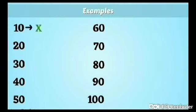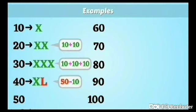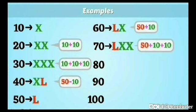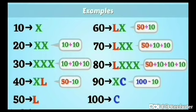Some other examples are: for 10 we write X. For 20, we write 2 times X. For 30, we write down 3 times X. For 40, we write 50 minus 10, that is XL. And for 50, we write L. Similarly, for others, we will write like this.